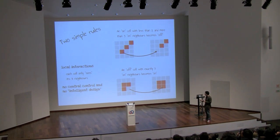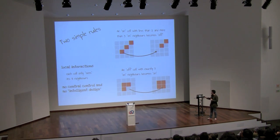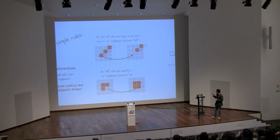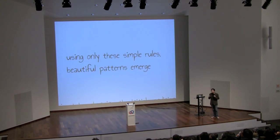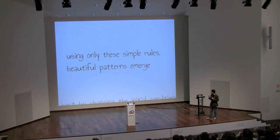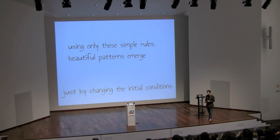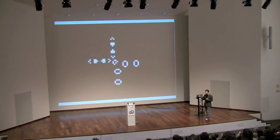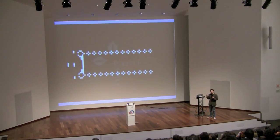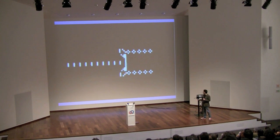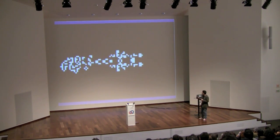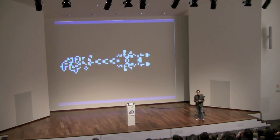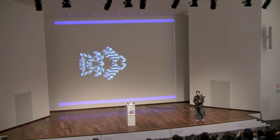The second important thing is that there's no central control — no mastermind, no one designing the shapes that will appear. And just with these simple rules, incredible patterns emerge depending on the initial conditions. All the variety of forms, all these different dynamics, the way they evolve — they are just a consequence of those two simple rules applied to different initial conditions. It's amazing that these highly structured organizations appear out of nowhere, with each cell only seeing its eight neighbors.